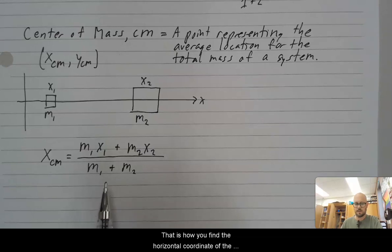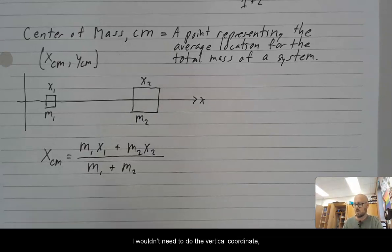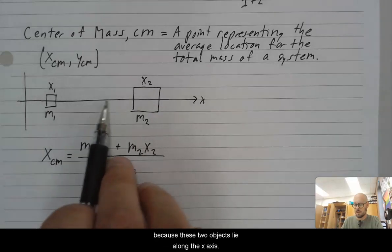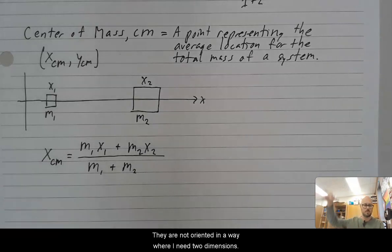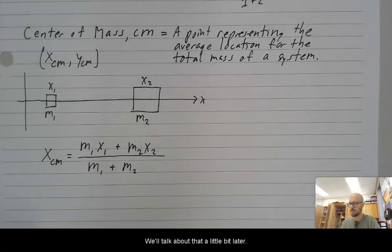That is how you find the horizontal coordinates of the center of mass. I wouldn't need to do the vertical coordinate because these two objects lie along the x-axis. They are not oriented in a way where I need two dimensions. We'll talk about that a little bit later.